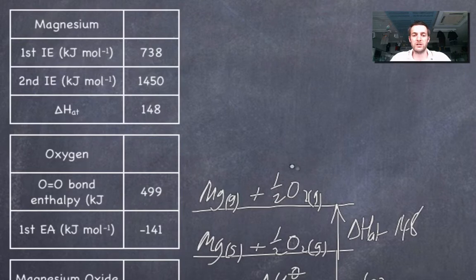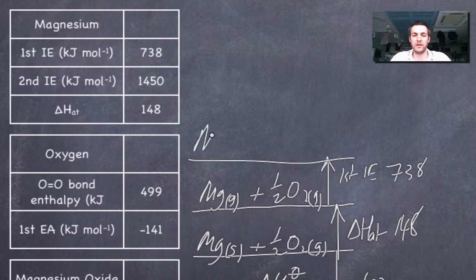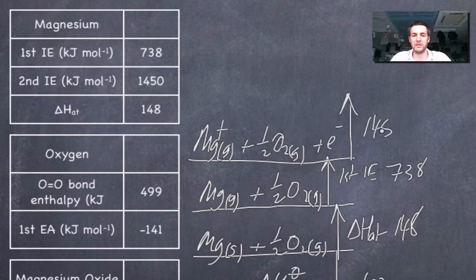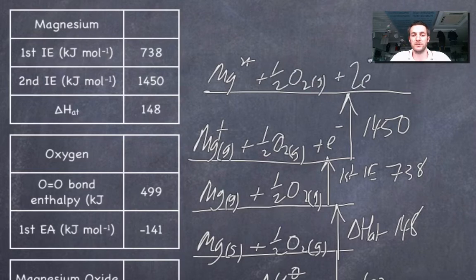Now, if we want to turn it into a 2+ ion, we've got to take an electron away from it. This is the first ionization energy of magnesium, 738 kilojoules per mole. What would I write on this level here? Well, I've now got a magnesium 1+ ion in the gaseous state, half an oxygen molecule still, and I've got an electron. Now I can turn this 1+ ion into a 2+ ion. This would be the second ionization energy of magnesium. And as we might expect, this is much bigger than the first, 1450, because we're now taking an electron away from a 1+ ion instead of away from an atom. So now we've got a magnesium 2+ ion, half an oxygen molecule still, and we've got two electrons here now.